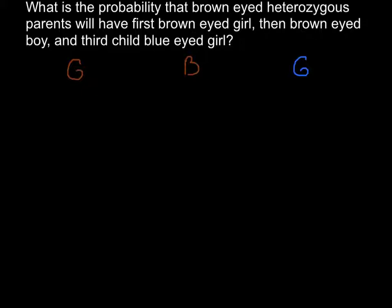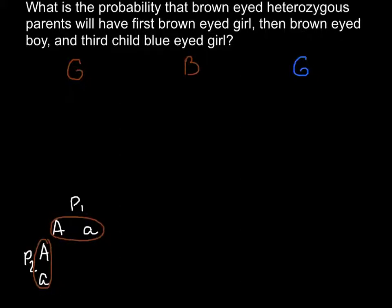In order to solve this problem, we first have to start with the genotype of the parents. We are told the parents are heterozygous. I will use capital A and small a for heterozygous. Parent 1 is capital A, small a, and Parent 2 is also capital A, small a. Both parents are brown-eyed but carry one recessive allele, small a.